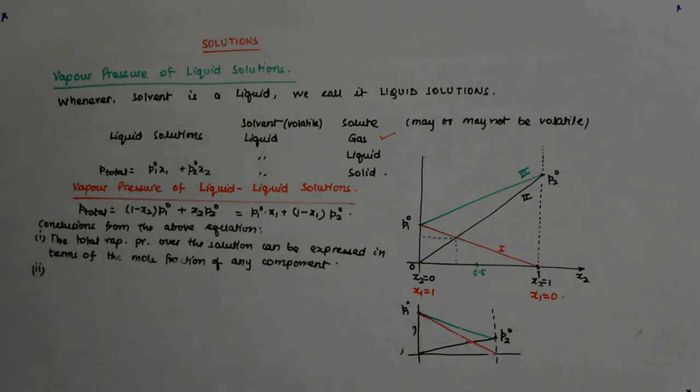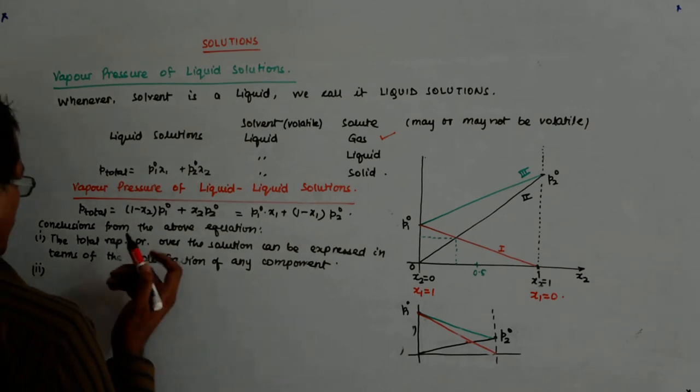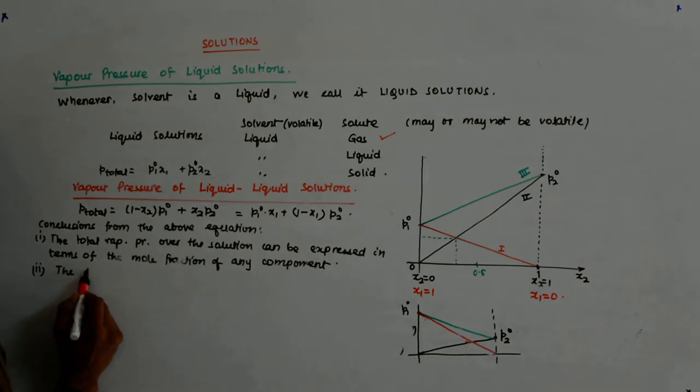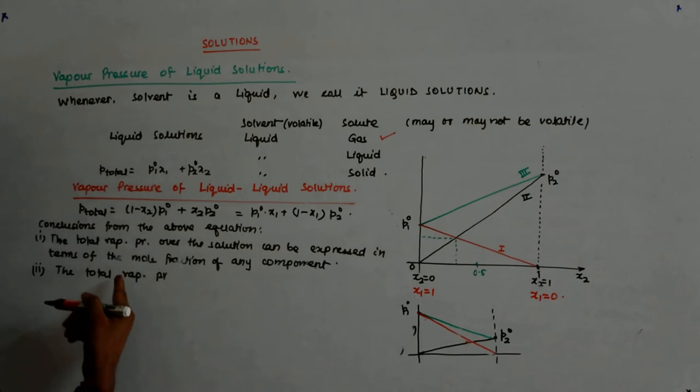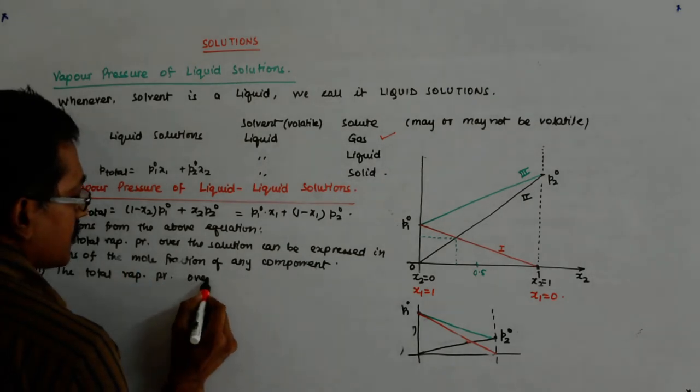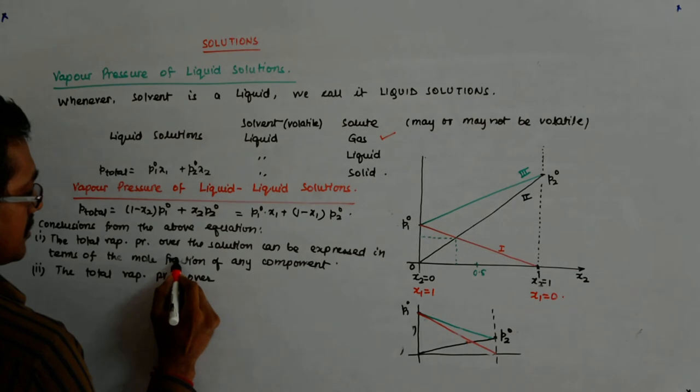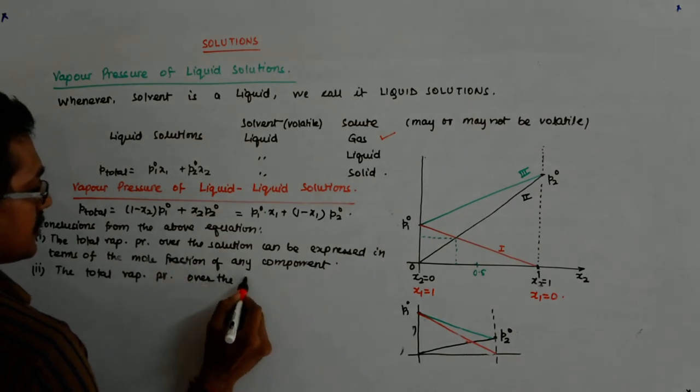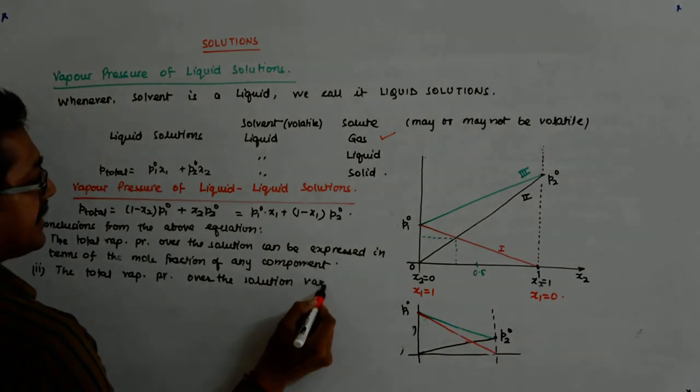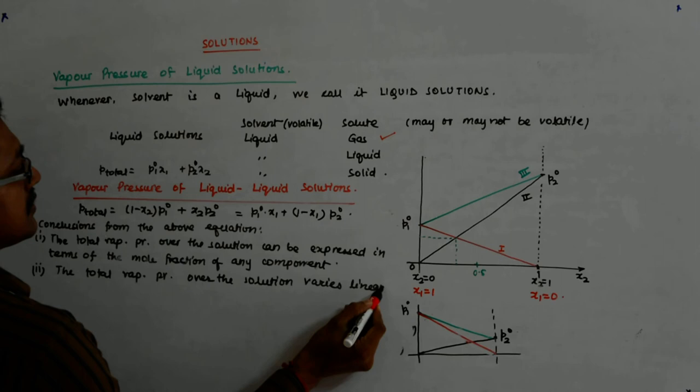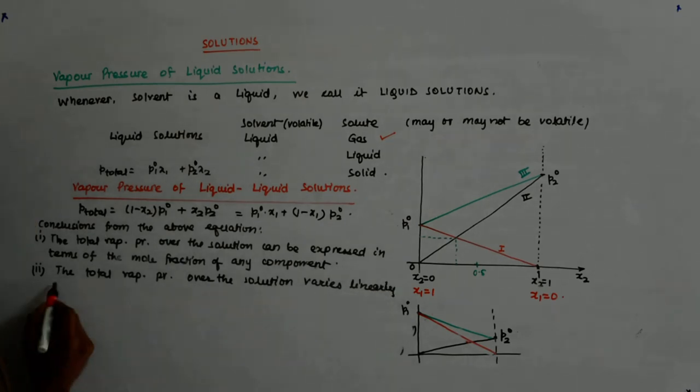What is the second conclusion? That the total vapor pressure over the solution varies linearly with the mole fraction of component 2, also component 1. The total vapor pressure over the solution varies linearly with x2.